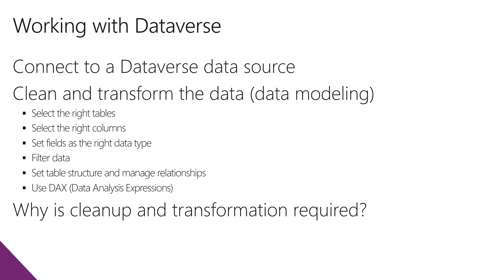In our lab, we're going to connect to a Dataverse data source. There's a process called data modeling, which is cleaning and transforming the data. The underlying tables in Dataverse have a very specific naming convention that's often not very human readable. With data modeling, you can exclude certain columns, include columns, rename them, set different data types, filter data like empty columns, set a table structure, and manage relationships between different types of data.